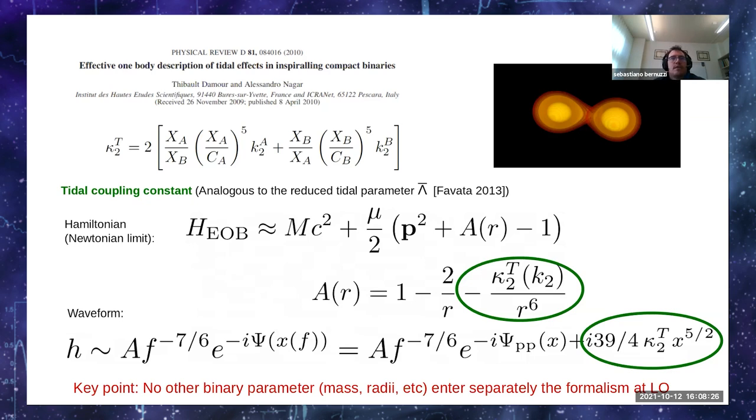At this level there's no other parameter that is associated to the neutron star structure. Perhaps this is a simple observation, but it turns out to be very useful to interpret the simulations. You have to imagine that you have simulated in numerical relativity the mergers of different binaries with different masses and equation of state, and have computed gauge invariant quantities like the merger frequency, the binding energy, and so on.